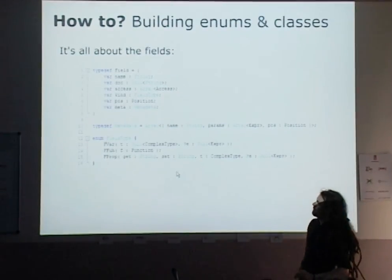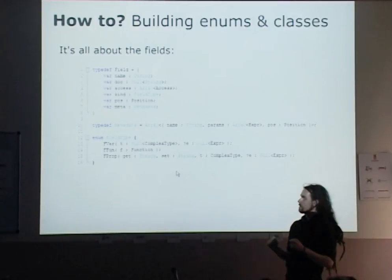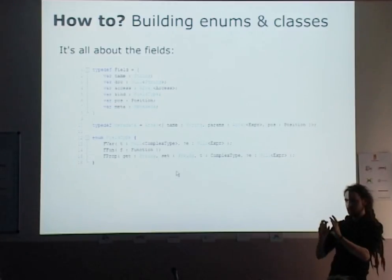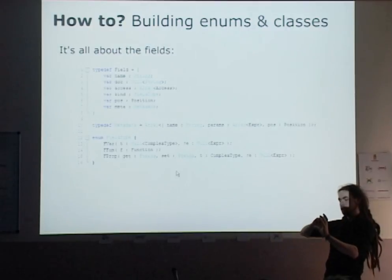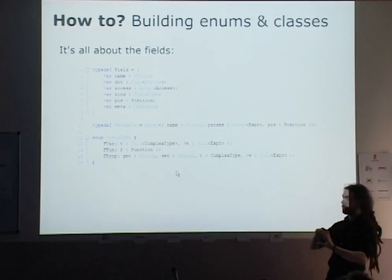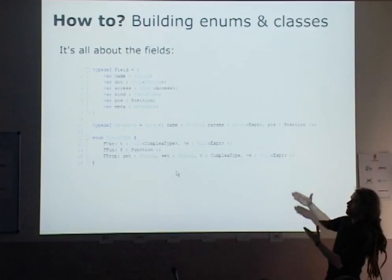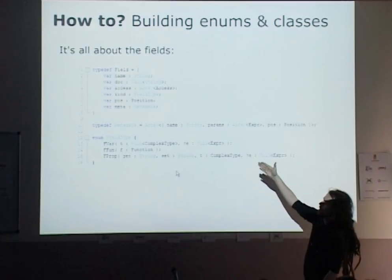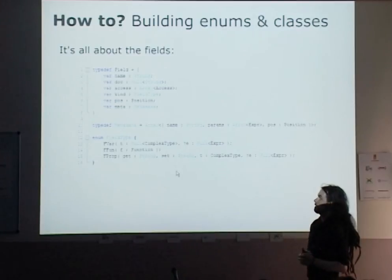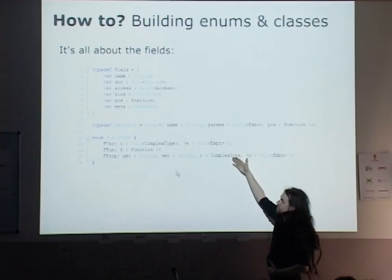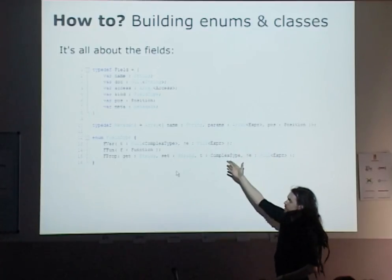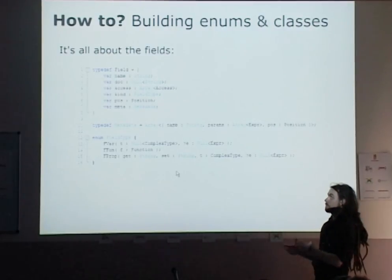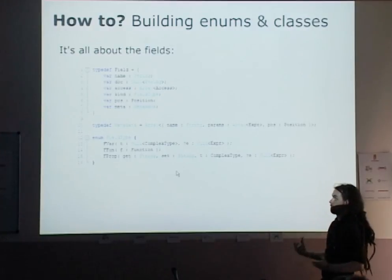Build macros allow you to build classes and enums. You have a macro that picks up a class or enum declaration, and you can start adding or changing fields. The data structures look like this: a field has a name, documentation, access modifiers like inline/public/static, a type which can be a variable, property, or function, and some metadata. All the data found by the parser is put in there, and you can work with it.